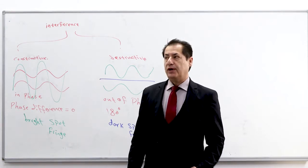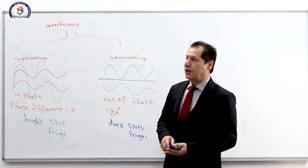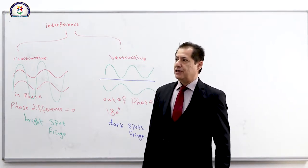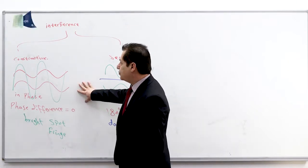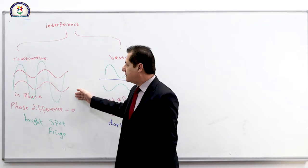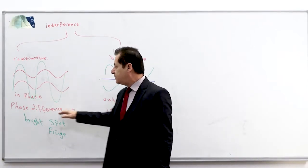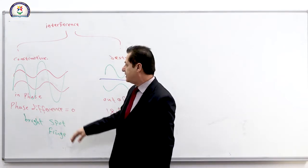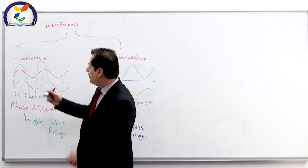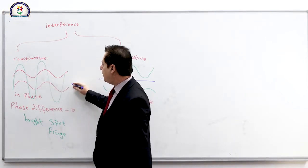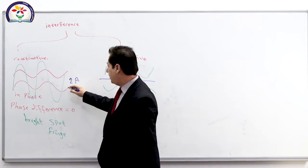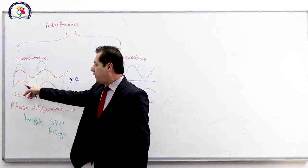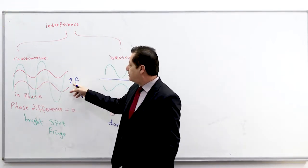Question number one: what happens if two light waves with the same amplitude interfere constructively? Constructive interference means the two waves are in phase, so the phase difference between them is zero, and bright spots or fringes appear on the screen. With two waves each having amplitude A, the resultant wave is 2A.